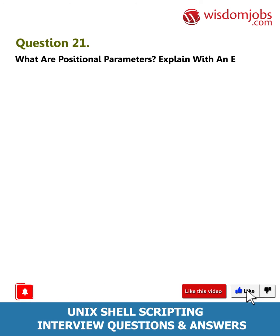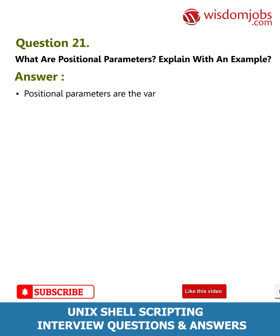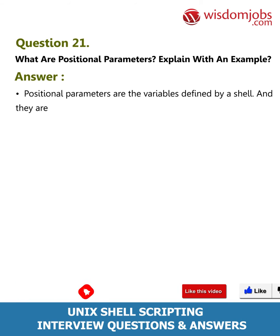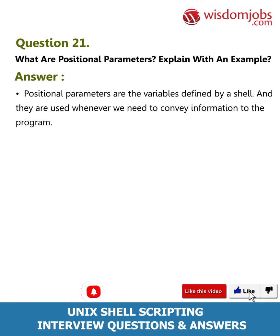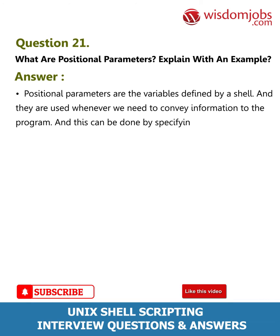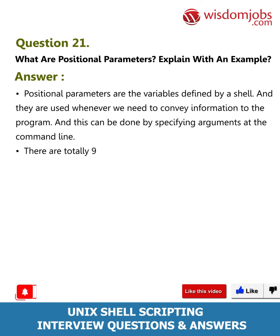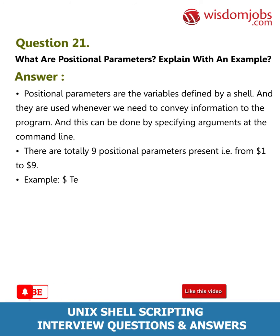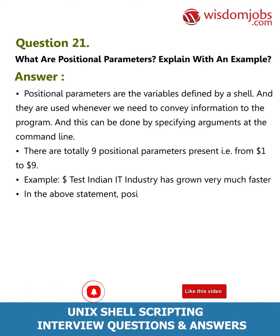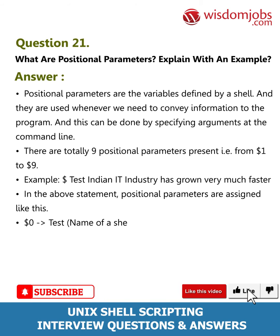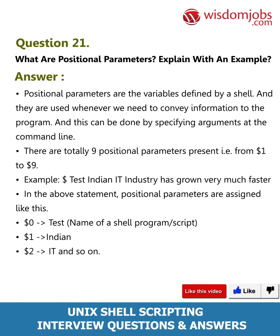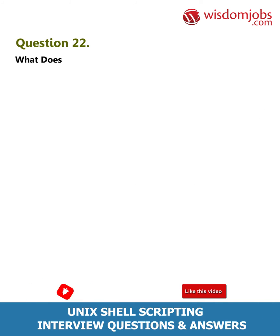Question 21: What are positional parameters? Explain with an example. Answer: Positional parameters are variables defined by a shell, used whenever we need to convey information to the program by specifying arguments at the command line. There are nine positional parameters: $1 to $9. Example: 'test indian it industry has grown very much faster' — positional parameters are assigned as: $0=test (script name), $1=indian, $2=it, and so on.